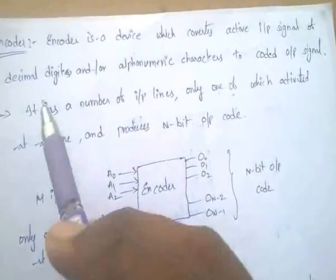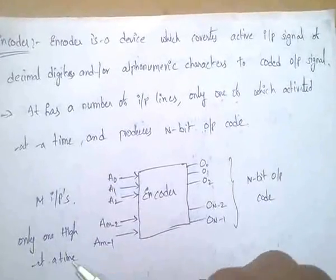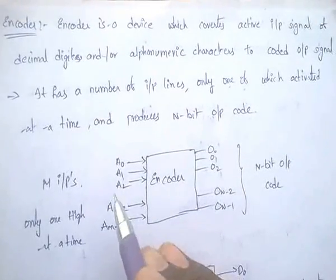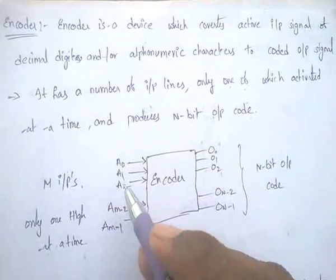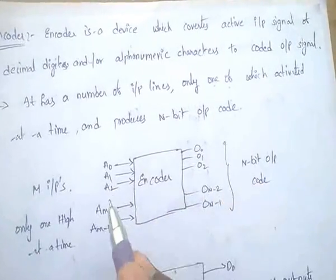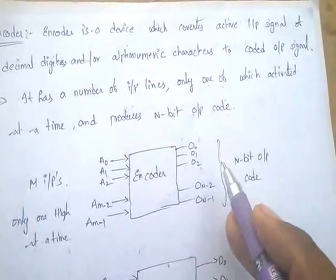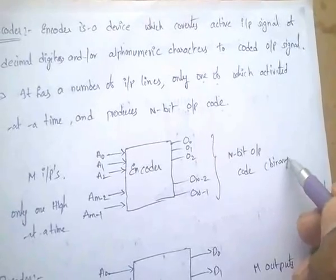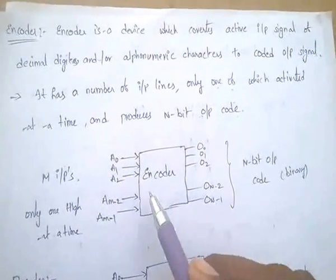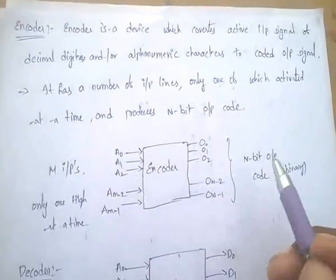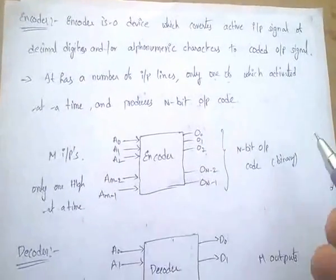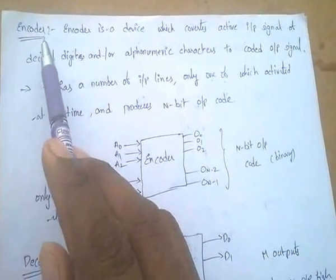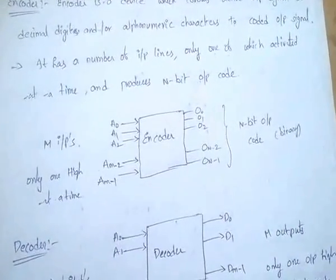The topic is encoder. An encoder is a device which converts an active input signal of decimal or any alphanumeric characters into output signals of coded form — that means binary coded signal. That is why it is named encoder: it gives coded output.